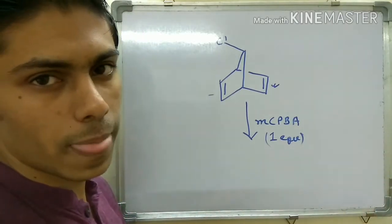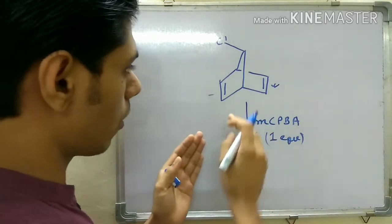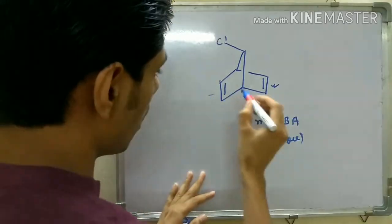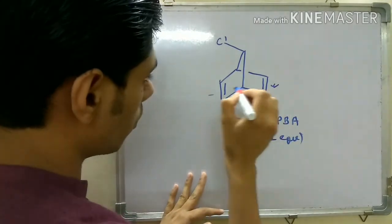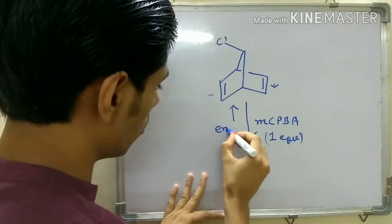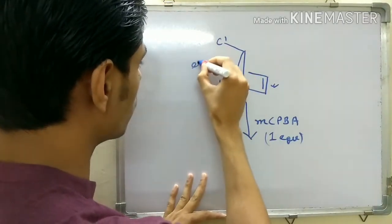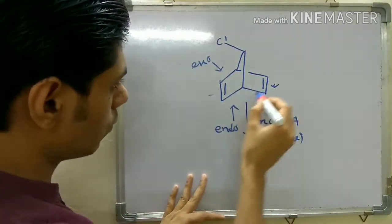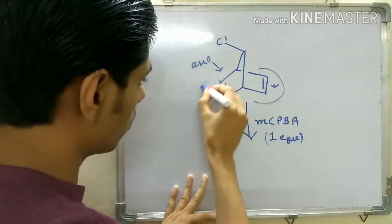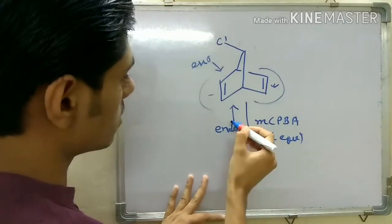If you think about the reactivity of these two double bonds - for both double bonds, the down face is the endo face and the up face is the exo face, because on the down face there is this bulky group, whereas on the up face there is a small group. So this is the exo face and this is the endo face.